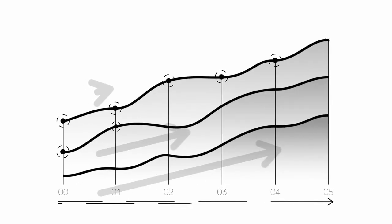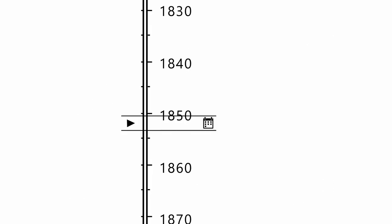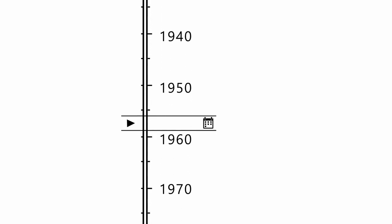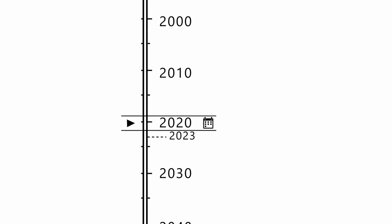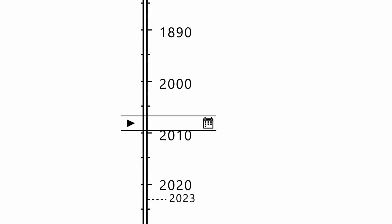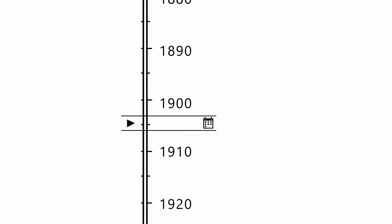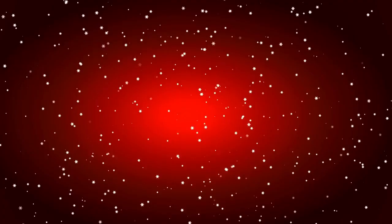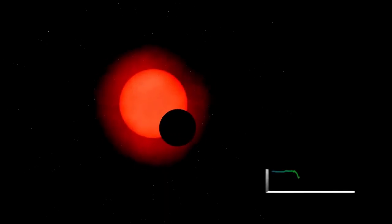Previous interstellar visitors, like 1i Oumuamua and 2i Borisov, were tiny in comparison—fragments no larger than mountains. For the third such visitor to be hundreds of times larger, that breaks every statistical expectation. Either we've been missing thousands of similar objects, or 3i-Atlas is something else entirely.